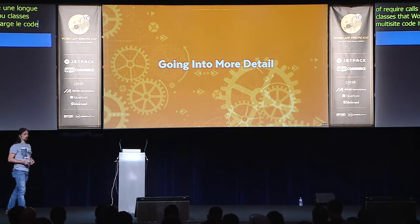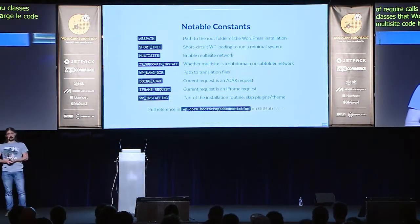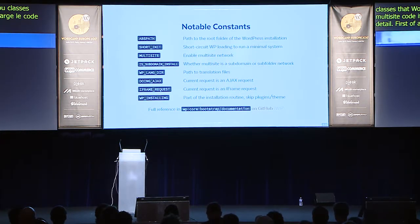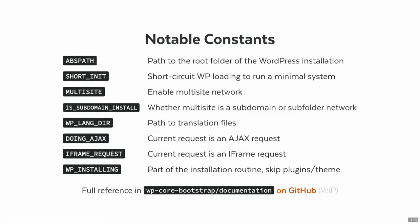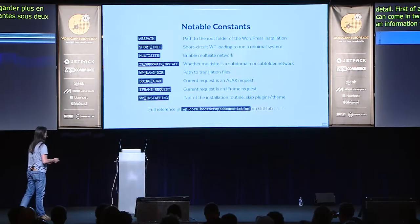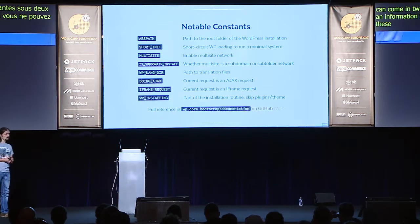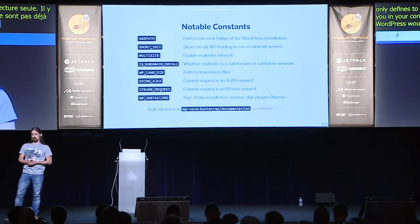So let's try to go more into detail. First of all, WordPress is heavily relying on constants. These constants can come in two forms. There are constants that are just defined to keep track of information for WordPress itself, but you can't directly change as a user — these are meant to be read-only. And then there are constants that WordPress only defines to a default value if they haven't been defined before. This allows you in your config file, for example, to provide overrides to the defaults that WordPress would normally use.